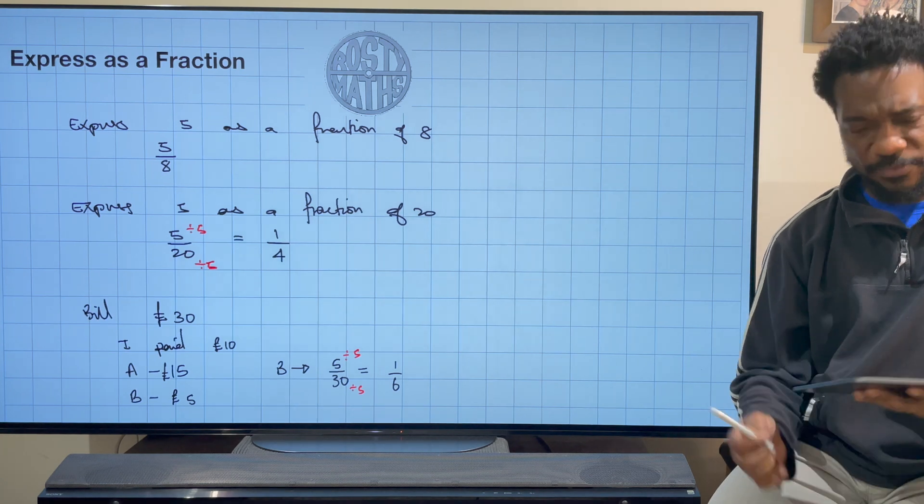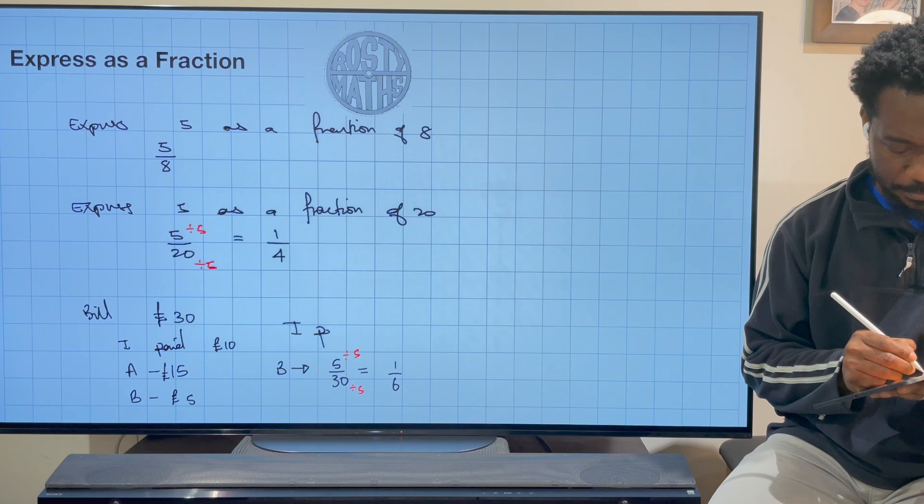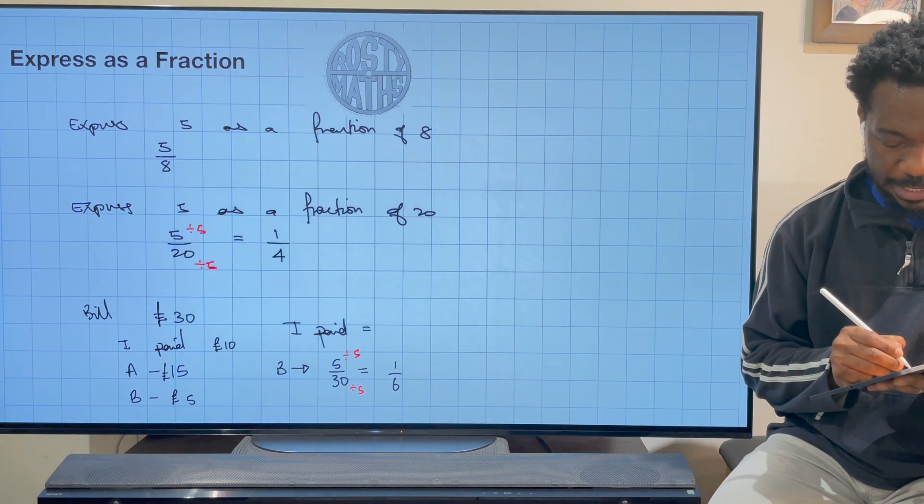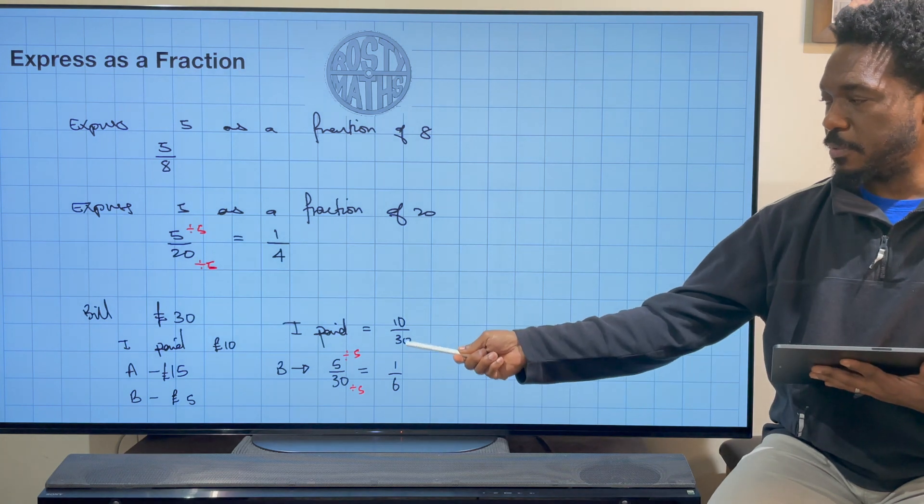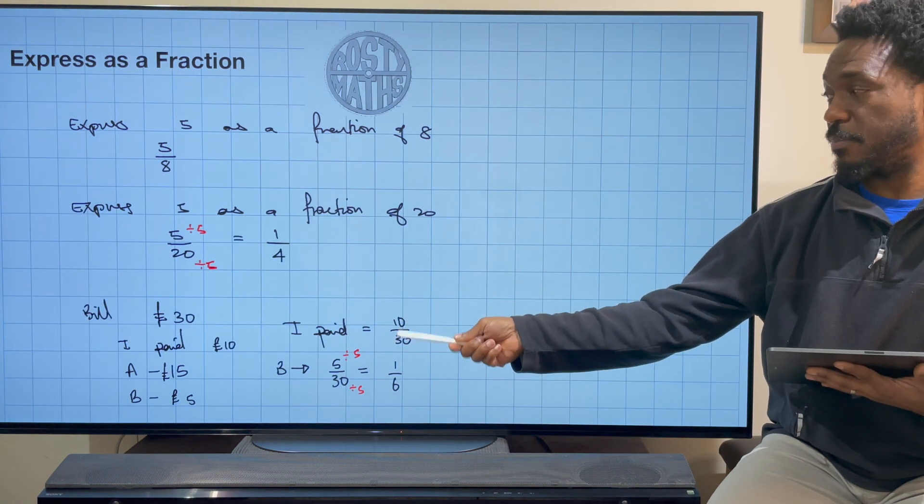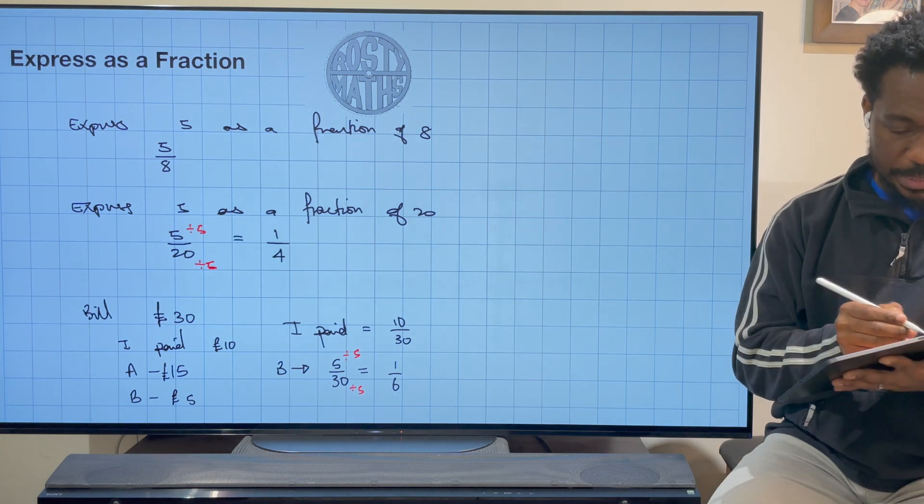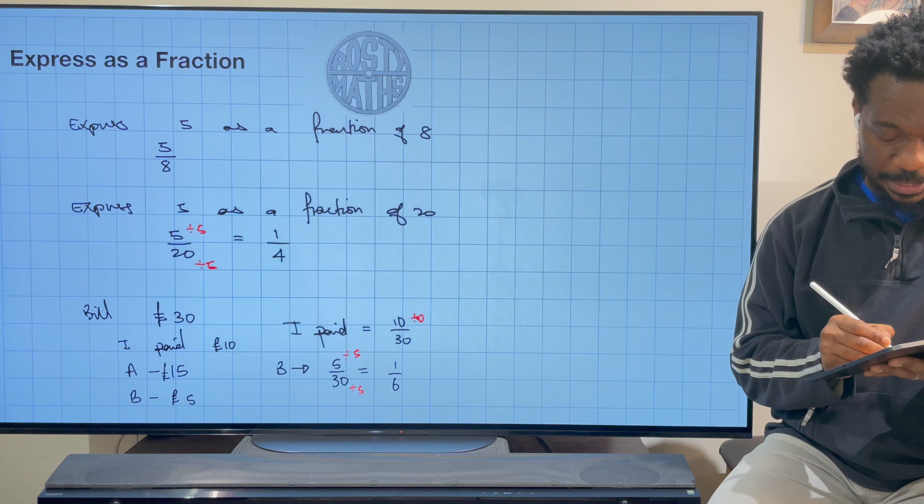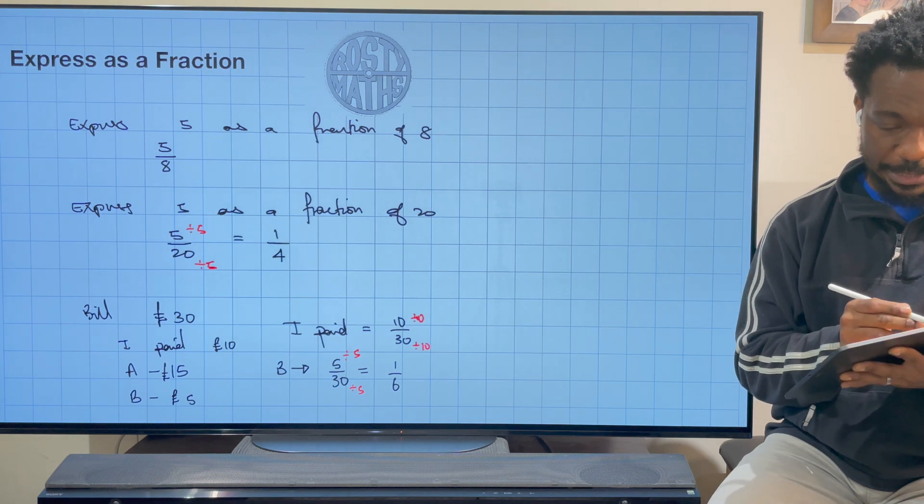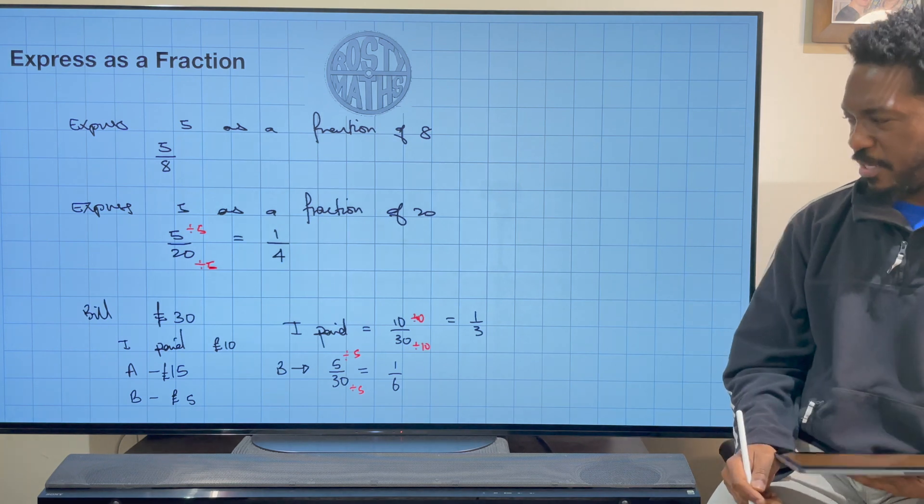How much did I pay? Let's find out how much I paid. So I paid 10 out of 30. They're both multiples of 10, so I'm going to divide by 10. And so when I divide by 10, that's going to be the highest common factor. Divided by 10, that's going to be 1, so I paid one third of the bill.